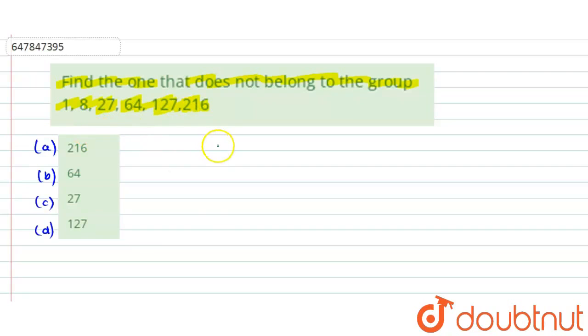Now, let's see, the first number given is 1. So, 1 is 1 cube, right? Next, we are given 8. 8 is 2 cube, okay? Next, we are given 27. So, 27 is 3 cube, right?